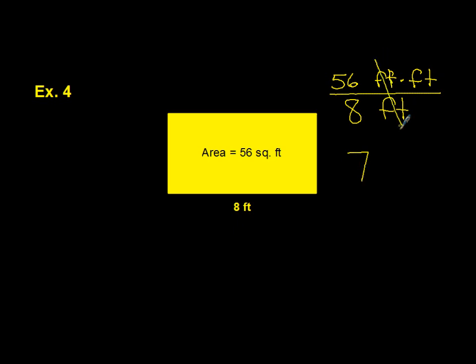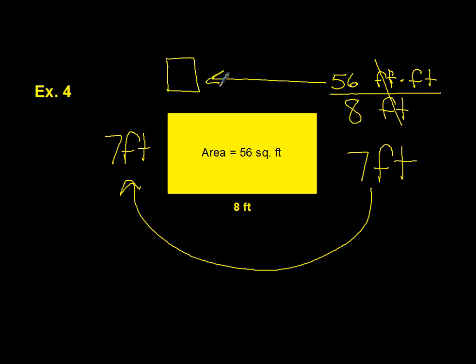We can cancel off the feet here. And we end up with 7 feet. So in this case, we took the square unit of feet, 56, in this figure down below, and we changed it into a linear foot with a side, so we have 7 down the side here.